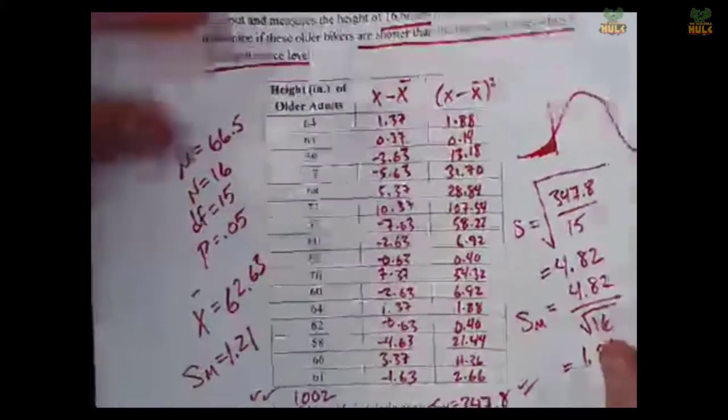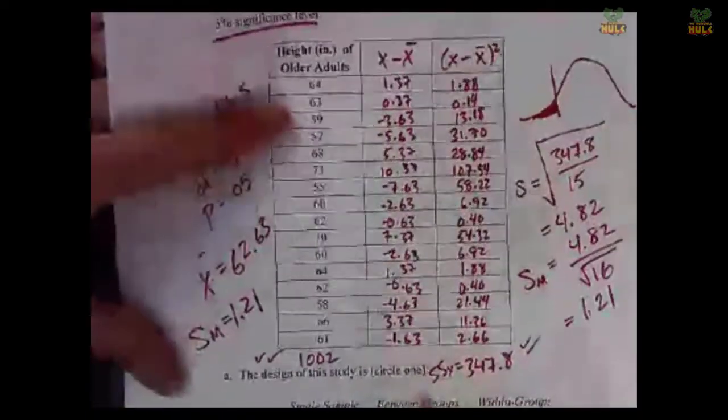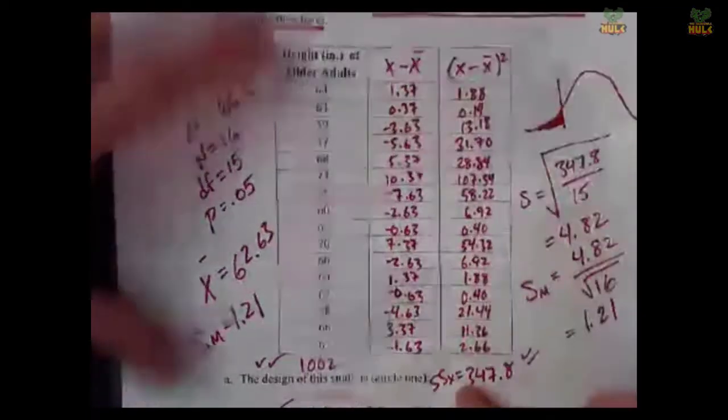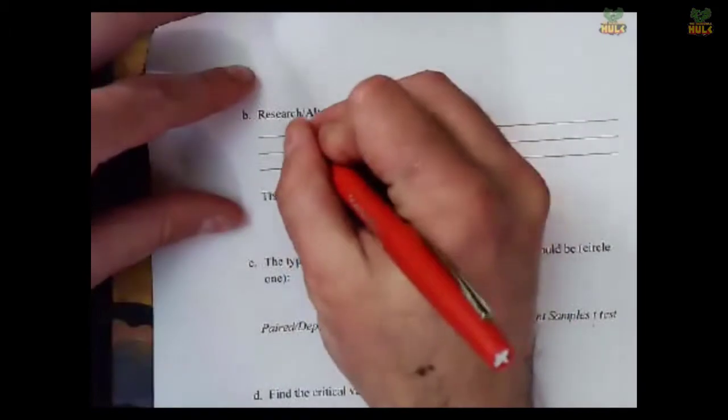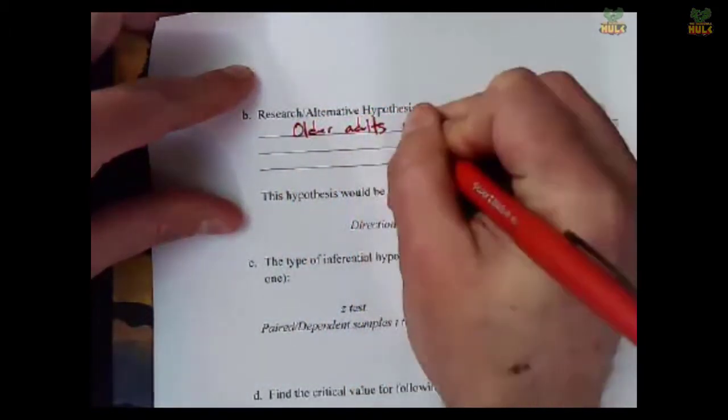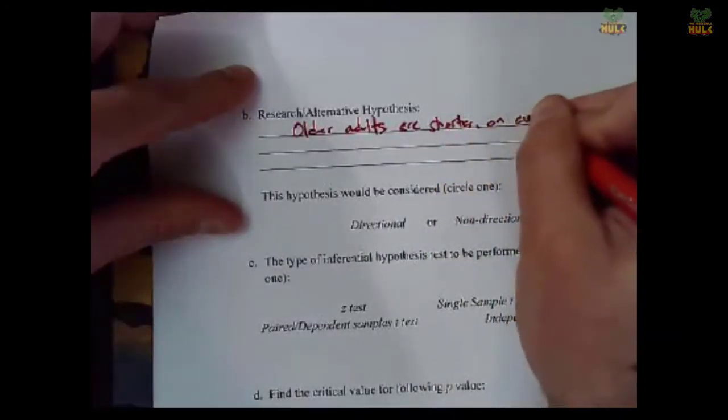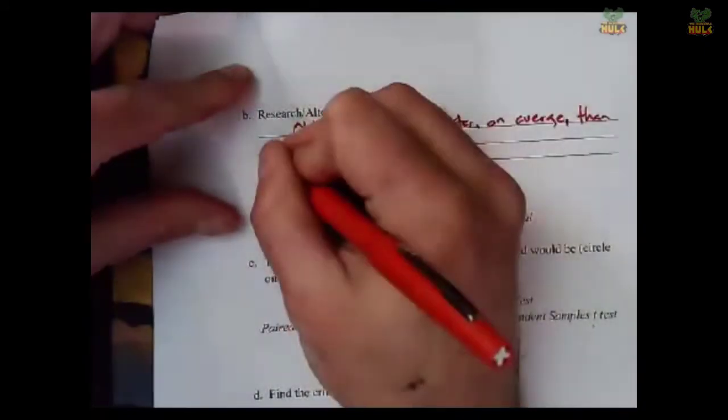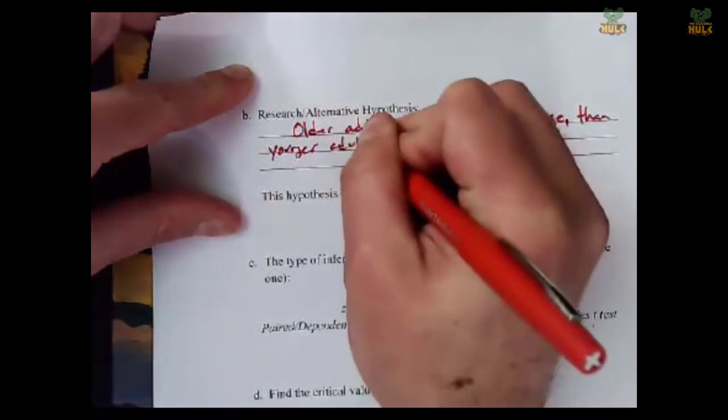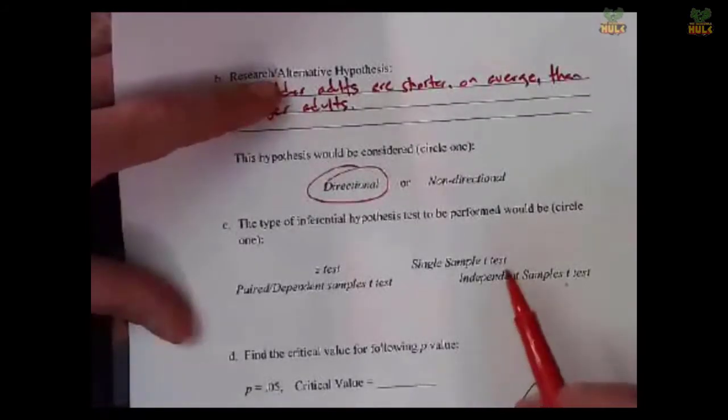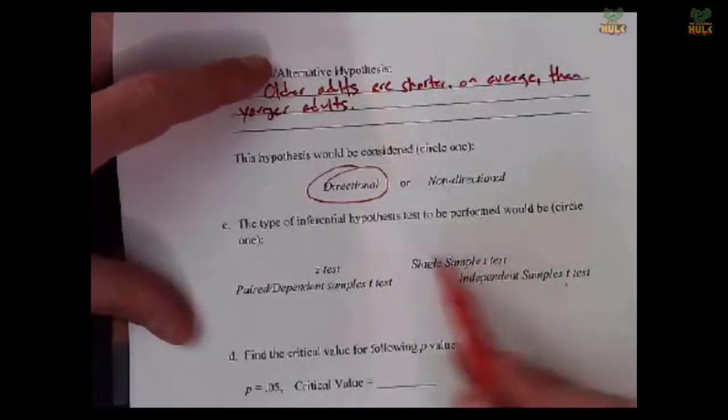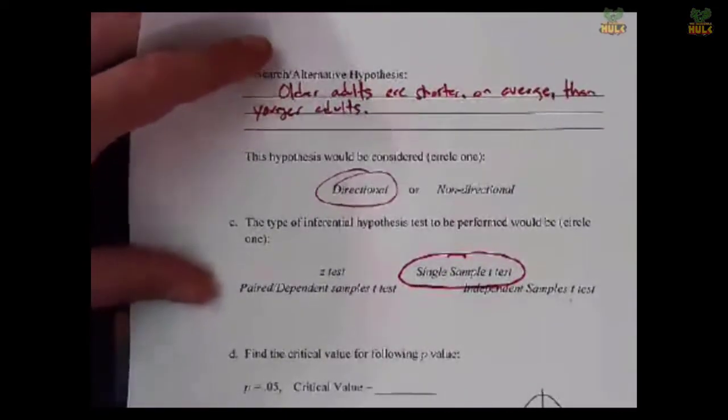All right, so now we know a lot of information. Let's go ahead and answer some of these simple questions and finish our problem. So the design of this study, we have just the one sample, so it's a single sample. It's not between or within groups because the independent variable is not really being manipulated between samples. The research or alternative hypothesis here, it said that she predicted that these individuals were shorter. So older adults are shorter on average than younger adults. All right, super simple. Shorter, that's a directional test. Remember we said that that p-value, that cutoff value associated with that p would then be the 5% all the way in some negative side, over here on the left side. Because we don't know population standard deviation, we can't do a z-test, so we are doing a single sample t-test. That's also why we created standard error from sample variability in that last step.